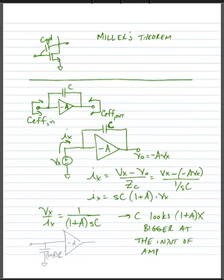And so we can say that this C looks 1 plus A times bigger at the input of the amplifier. So rather than drawing the capacitor around the amplifier, we can disconnect the capacitor and just put a capacitor at the input that is equal to 1 plus A times the original capacitance.